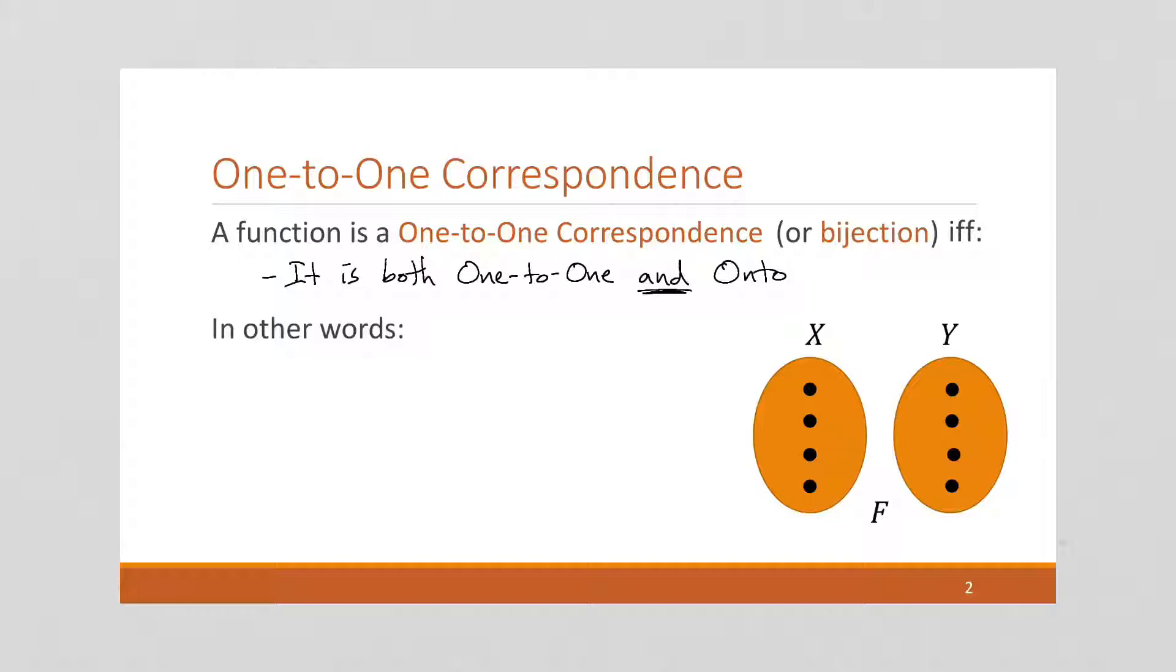So remember, functions don't have to be one-to-one, they don't have to be onto. They can be. These are properties that a function can have. And if a function is both one-to-one and onto, then we call it a one-to-one correspondence.